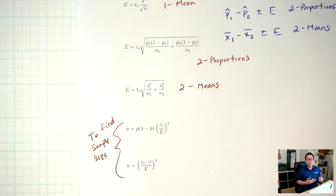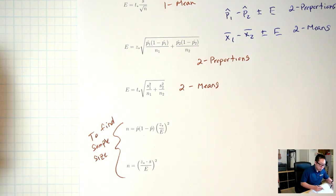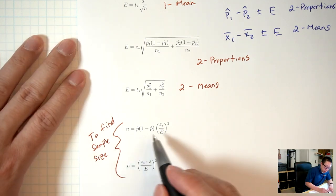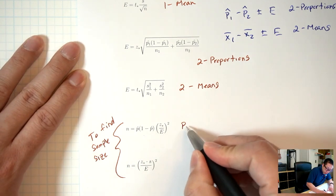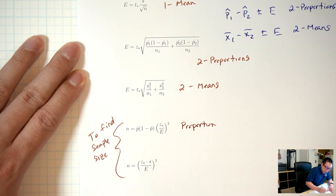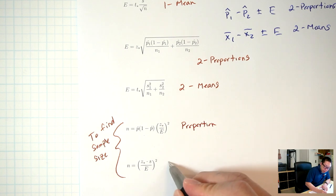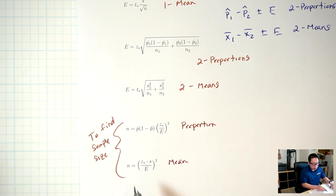The sample size formulas apply in the beginning stages of your study — you're planning your study and haven't actually done it yet. These tell you how many people you should include in your sample. The first one is for proportion. The second one, even though it has a z-star, is for mean. We talked about back in Chapter 8 why, even though this is mean, we have to use a z-star.